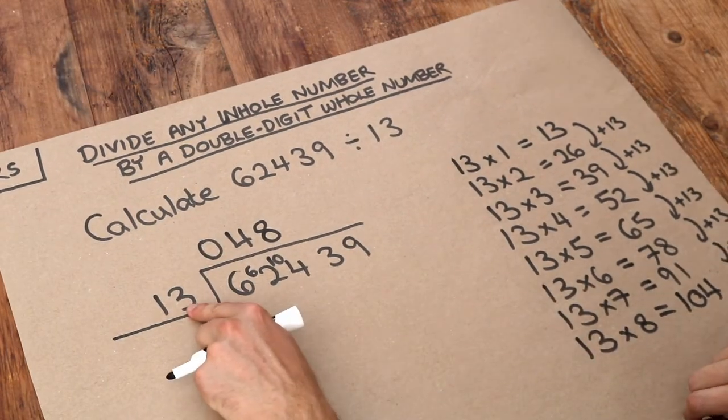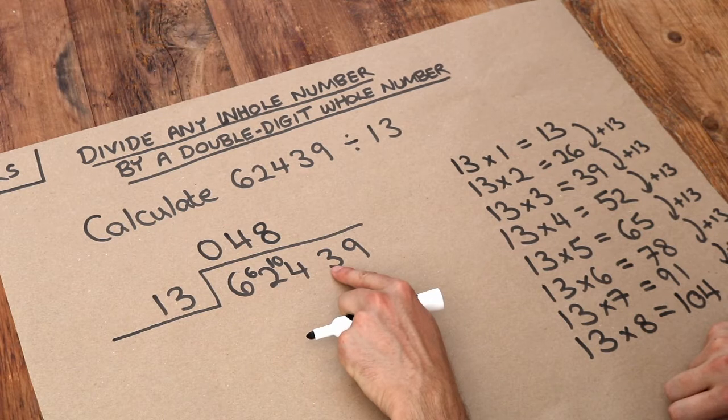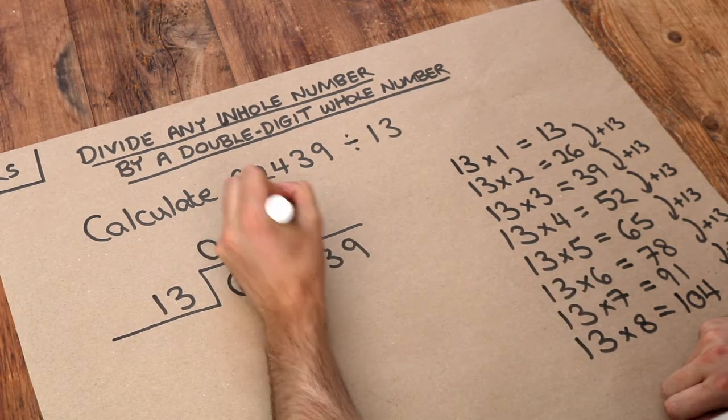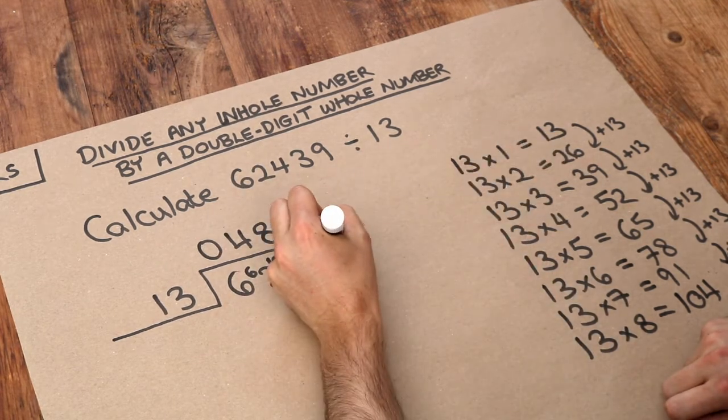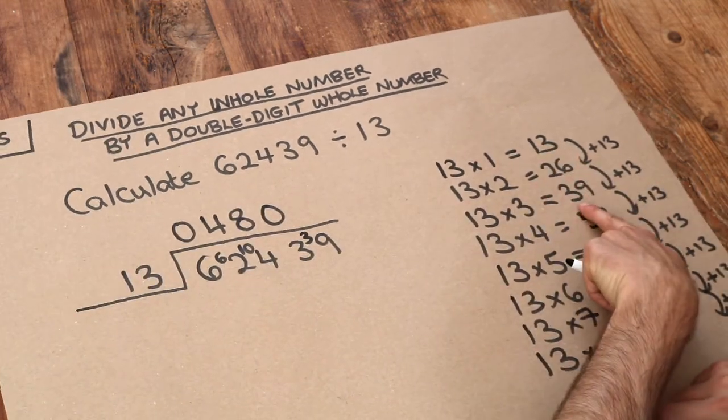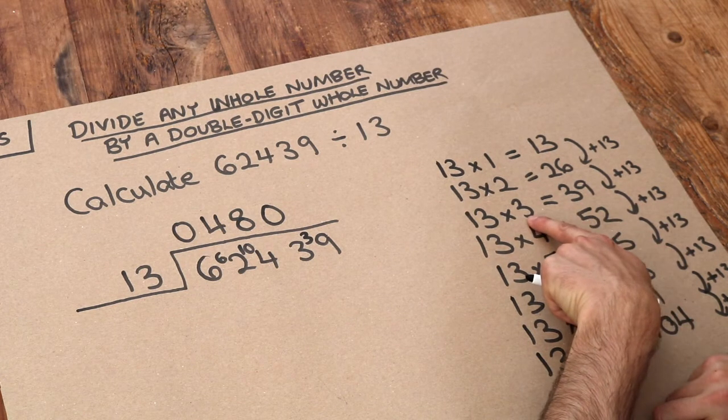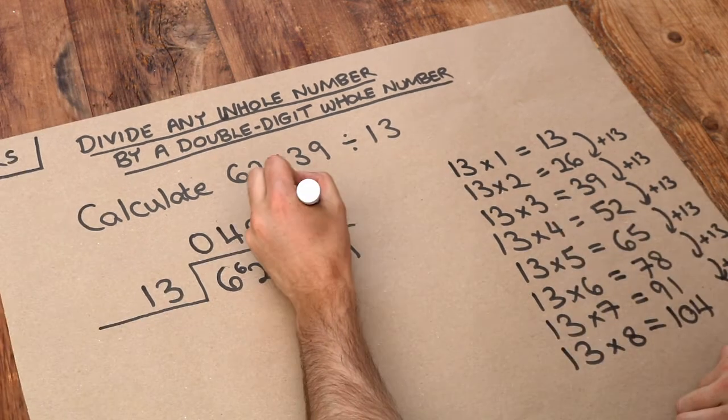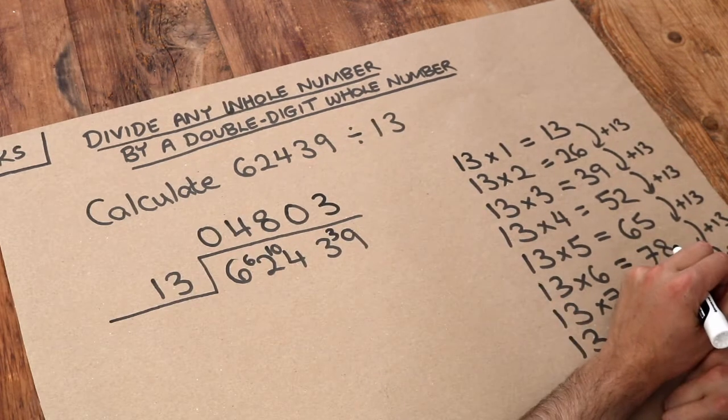And now we're doing 13 into 3. It doesn't go in at all. But we still have those 3 sweets left over. And then finally 13 into 39. Looking down here. Oh it goes in exact number of times. We can see it goes in 3 whole times. So the answer is 4,803.